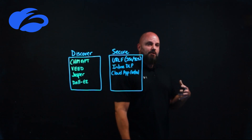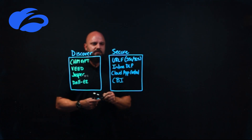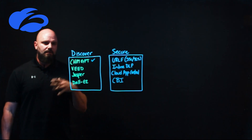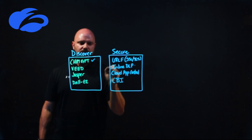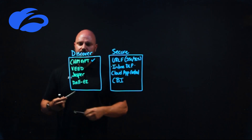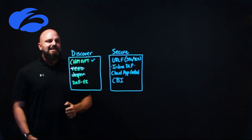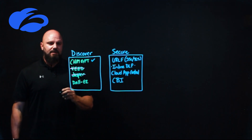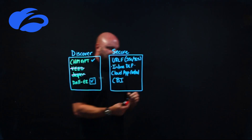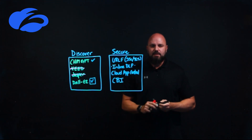Cloud app control gives you the ability to monitor uploads and downloads. Last but not least, we have cloud browser isolation — CBI. So you've discovered these applications, and maybe ChatGPT is the application of choice for your organization — you allow that, but you still enforce inline DLP. Perhaps Veed has no business case whatsoever — block it. Same with Jasper. And maybe for DALL-E, there's a corner case where you want to leverage it but not open it wide open — you put it into browser isolation. They can still interact with the application, but they can't download anything to their sanctioned device.